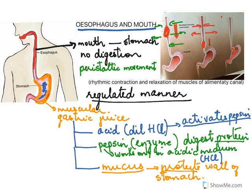To recap the gastric juice: it has three components — the acid, which activates the pepsin; the pepsin, which helps in the digestion of proteins; and the mucus, which protects the wall of the stomach.